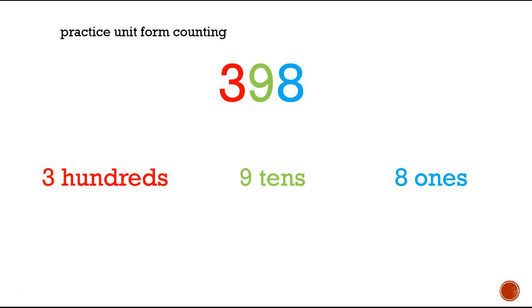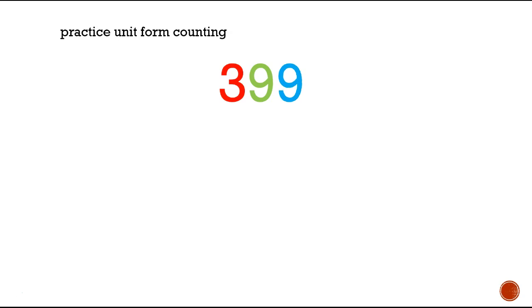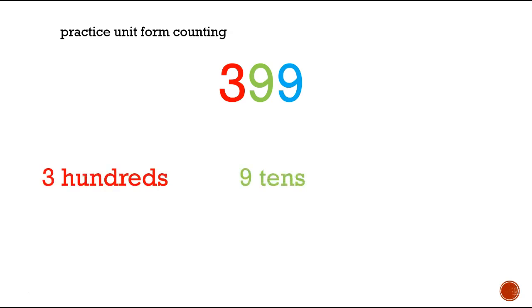Here's our next one. Let's write 399 out in unit form. 3 hundreds, 9 tens, 9 ones.